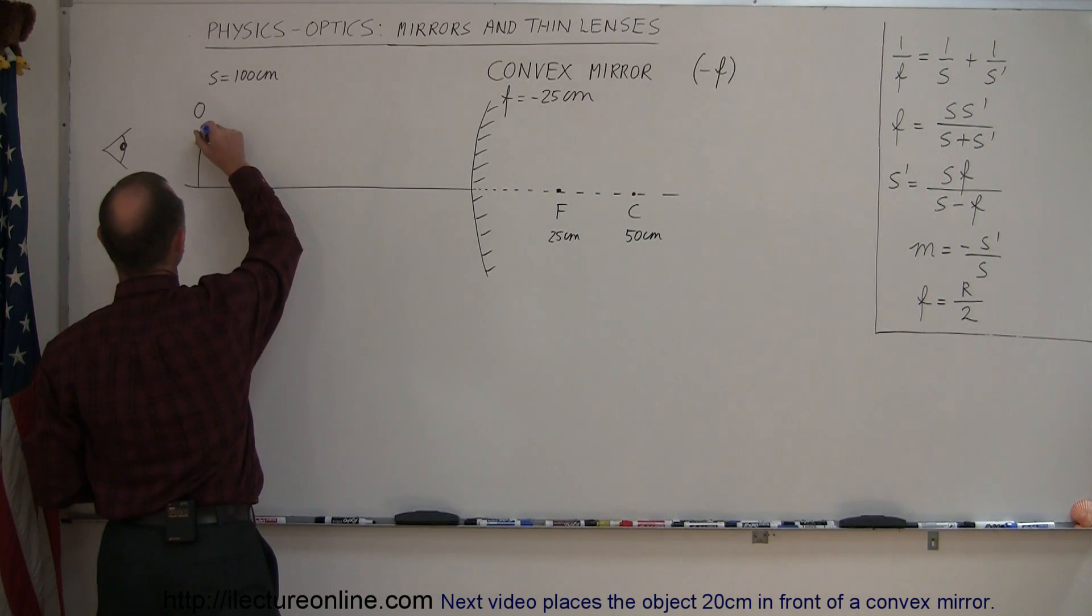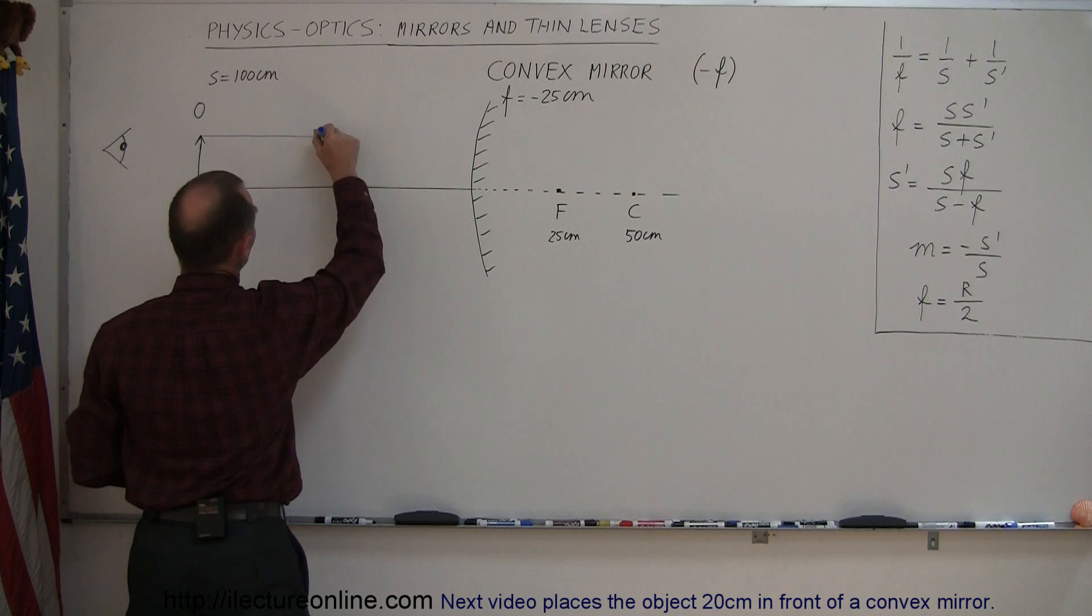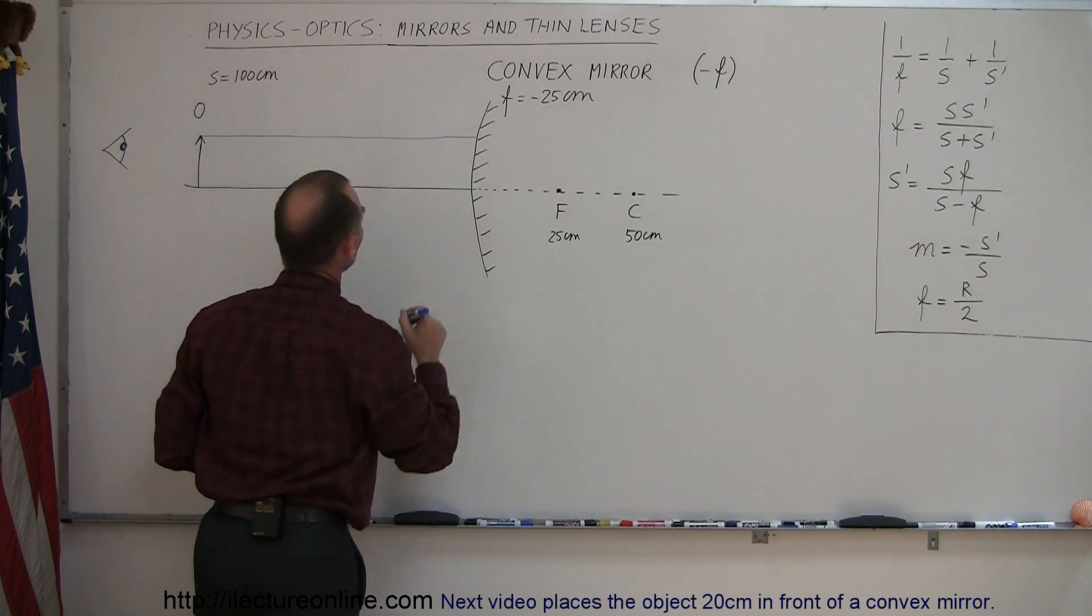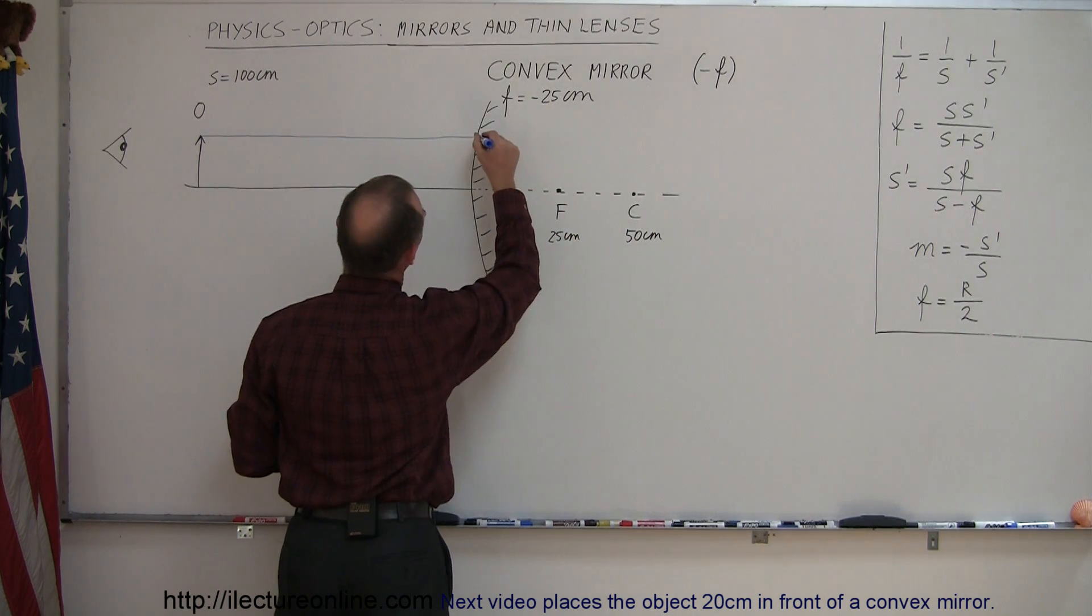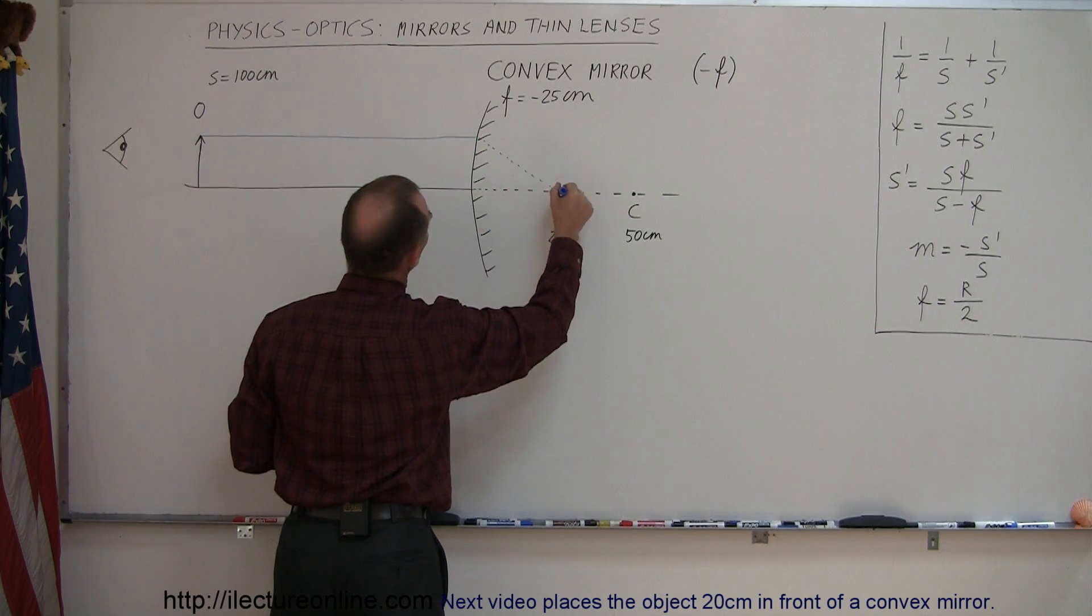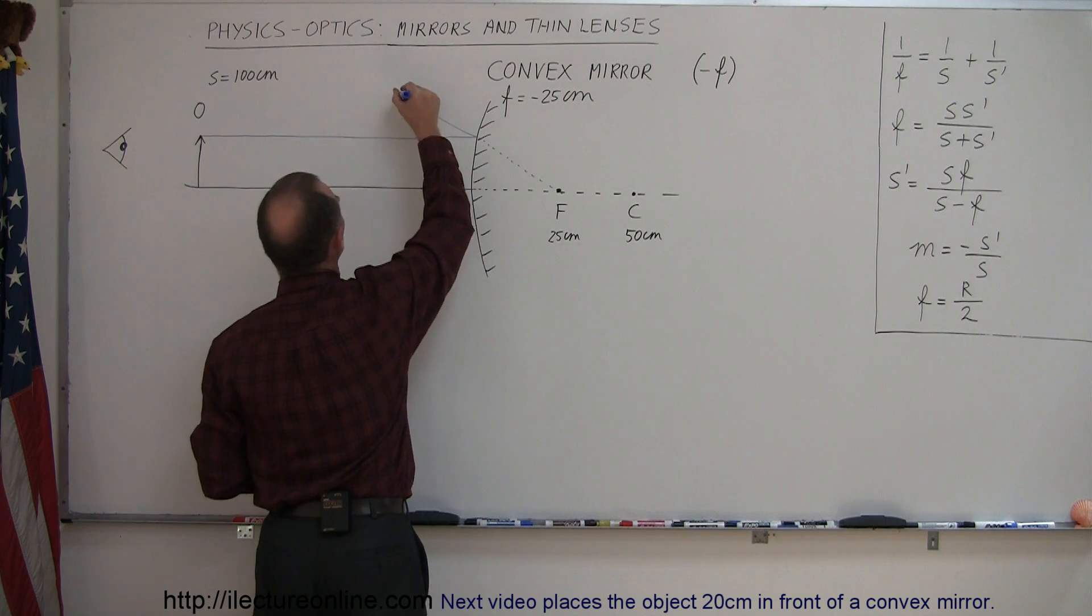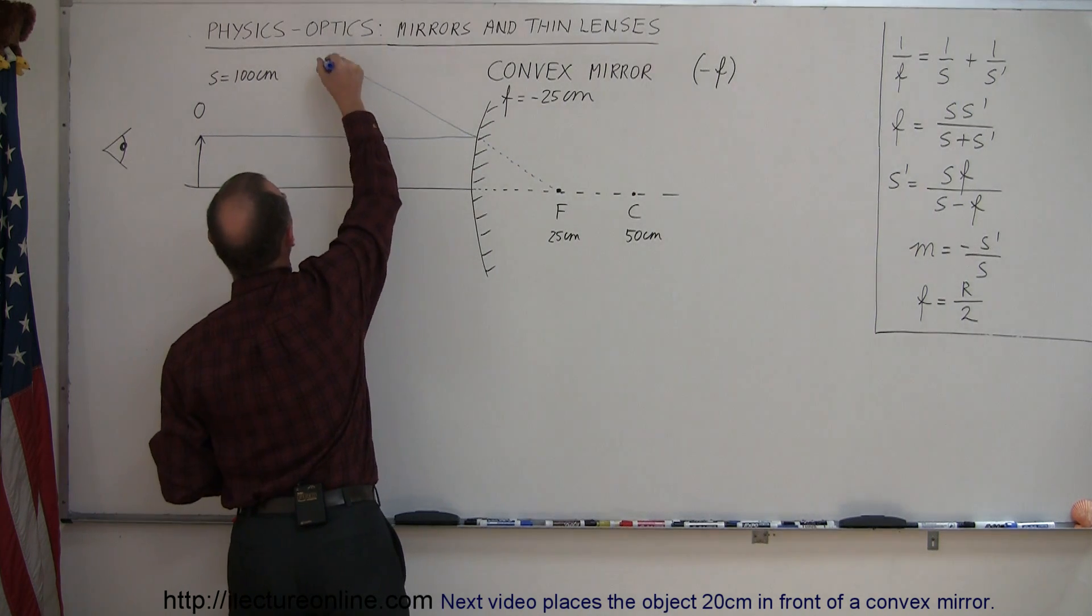To do that, we're going to draw our rays. The first ray always is parallel to the normal until it hits the mirror. When it hits the mirror, it's going to reflect as if it came from the focal point. So we draw a little dashed line over here. You can see that it will reflect back in this direction, ray number one.